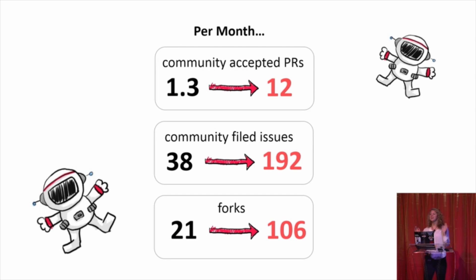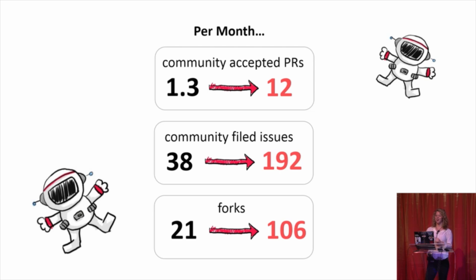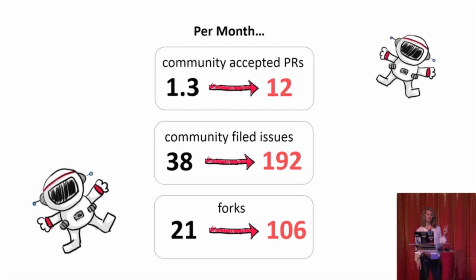The community is now steering us towards improving our documentation — we're working on how to do collaboration on docs in the open, so if you have ideas come find me or Jared, because the wiki model isn't really working for us. The biggest change for us was this move from source open with limited contributions to fully open source. We now have 10 times the number of community accepted PRs per month, five times the number of community filed issues per month, and five times the number of forks per month, just by moving to working mostly in the open instead of behind closed doors.